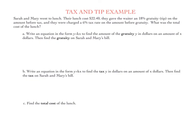Now sometimes you'll see ones where tax and tip are combined, and this is like what happens in real life. You go out for lunch, you're going to have to pay tax and you're going to have to tip your waiter. So this is a good one to practice with. Sarah and Mary went to lunch. Their lunch cost $22.40. They gave their waiter an 18% tip on the amount before tax, and they were charged a 6% tax rate on the amount before gratuity. And we're looking to find the total cost of the lunch. So first, let's write an equation in the form of Y equals KX to find the amount of the gratuity in dollars on an amount of X dollars, and we're going to then find the gratuity or the tip on their bill.